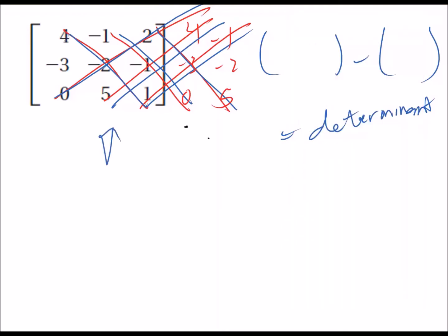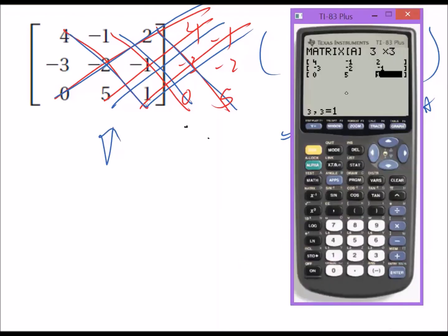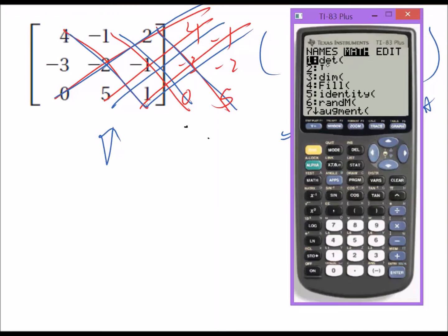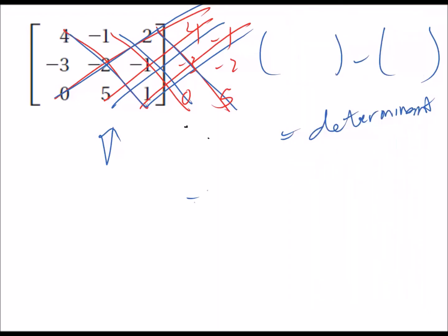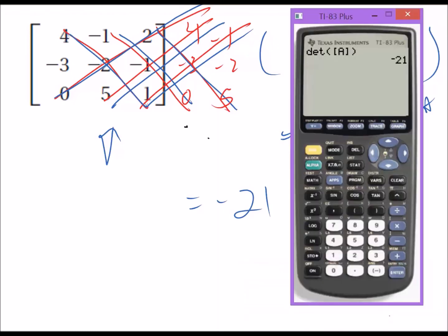Now we have this matrix represented on the calculator. Let's quit out and hit second matrix, go to math. Number one is determinant, so press one. Then grab that matrix - determinant of matrix A. That gives us our answer: the determinant is -21.